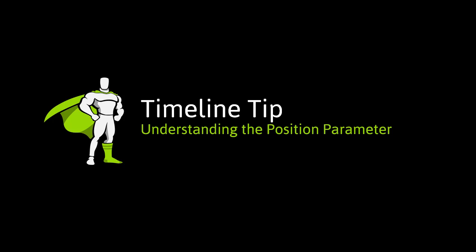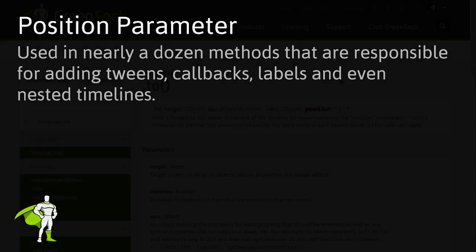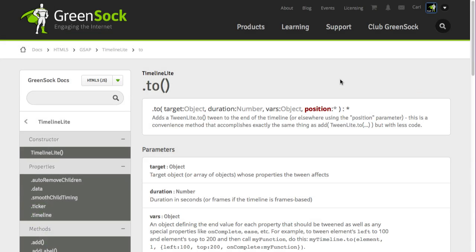Hey everyone, Carl Schoof here from GreenSock. Today I want to talk to you about how the position parameter is the key to mastering your usage of TimelineLite and TimelineMax. The position parameter is used in nearly a dozen methods that are responsible for adding tweens, callbacks, labels, and even nested timelines. Today though, I'm just going to focus on how it is used in TimelineLite's To method.